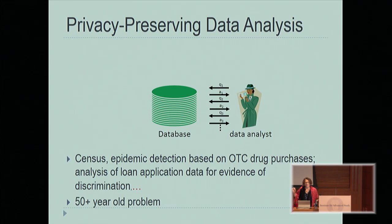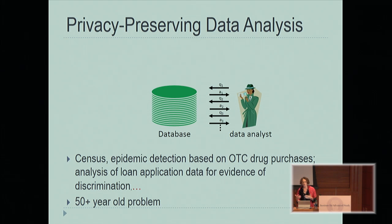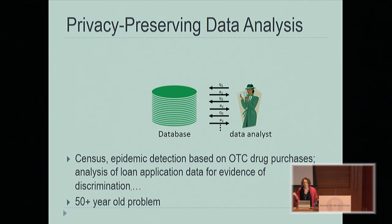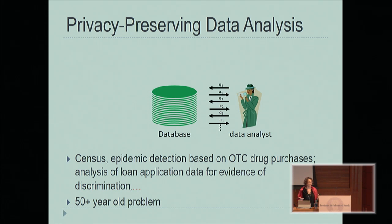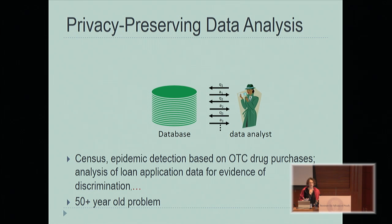The driving application or example I had in mind — I was talking this over with my then intern, Adam Smith — was the Census Bureau. The Census Bureau has the data of the people. It is being analyzed for the benefit of the people, to apportion the people's resources, and there is a legal mandate for privacy.